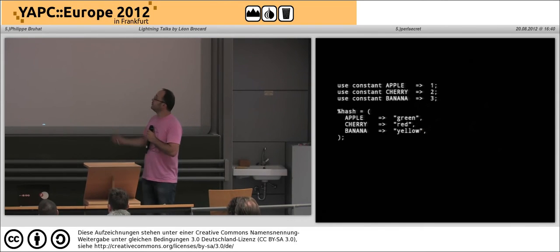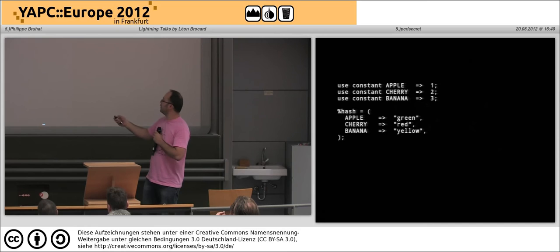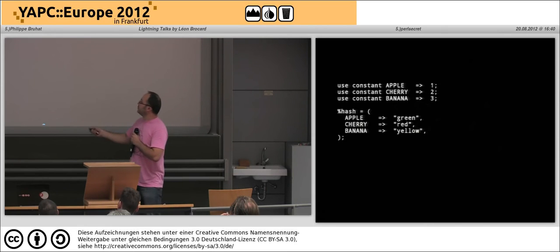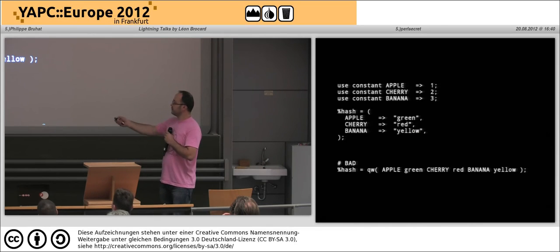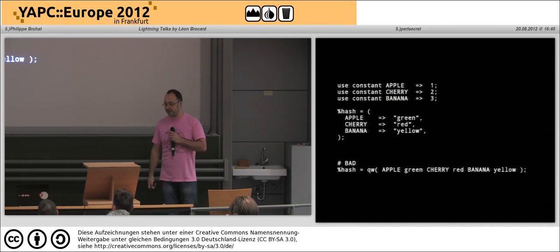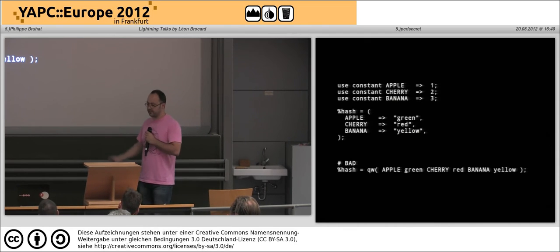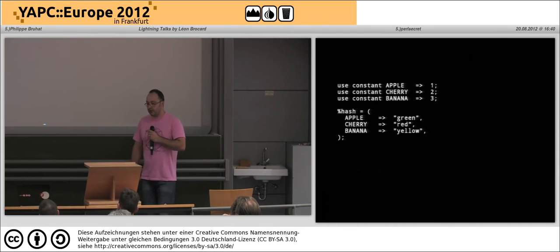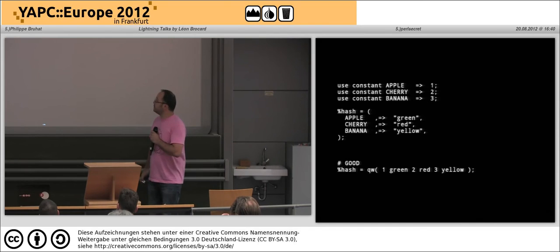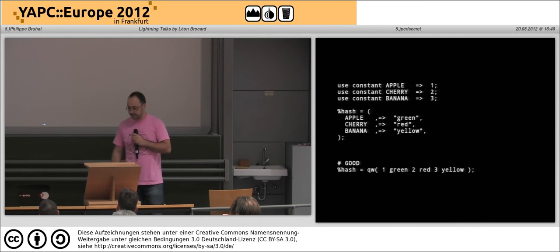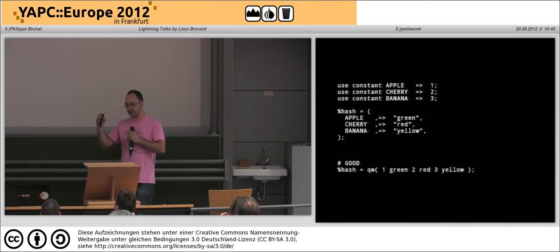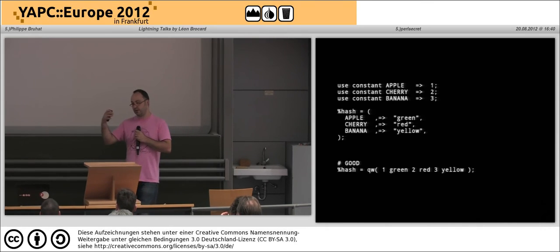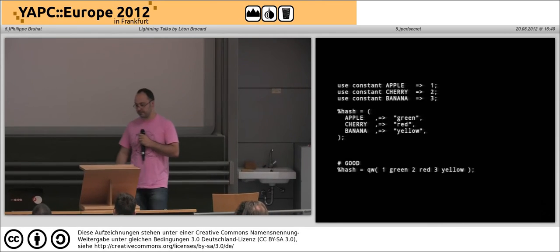So let's show an example. Imagine this code where you define constants, and then you want to have a hash where the constants point to the color. Of course, this is wrong because of stringification on the left side of the fat comma. One way to fix this is to add parentheses, but then it's ugly. So the other way is to flick off the off switch, and then you get this, which is what you wanted. Very nice — it also preserves the good looks of the fat comma when you make hashes.